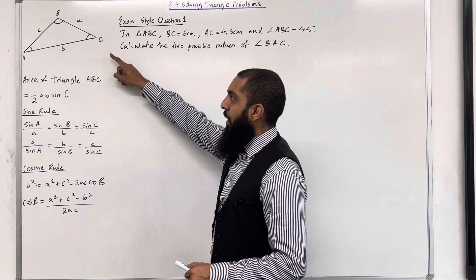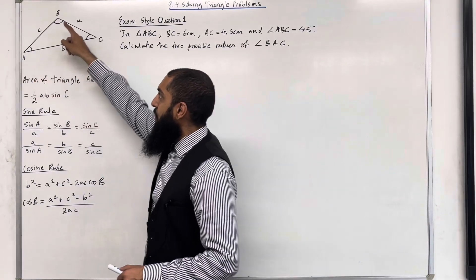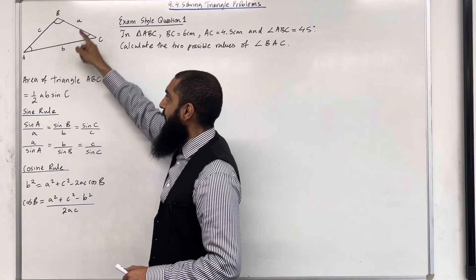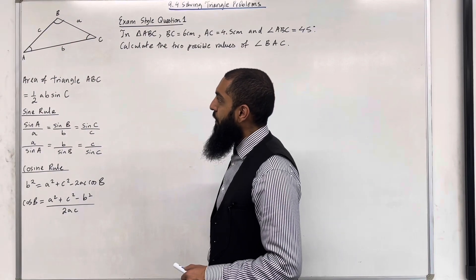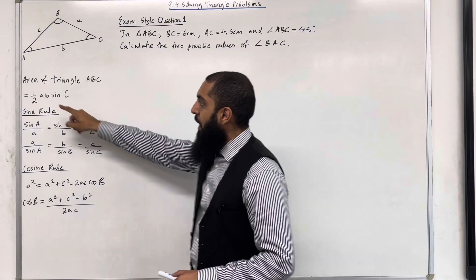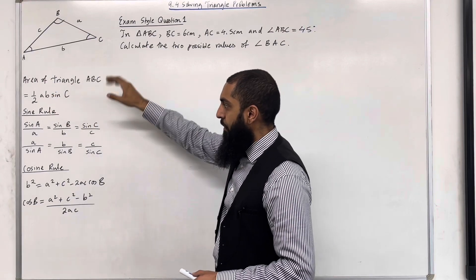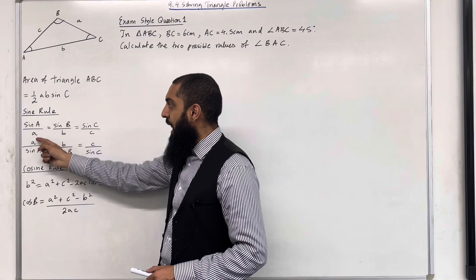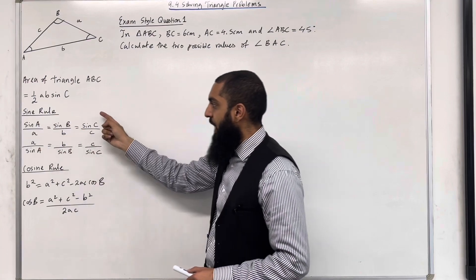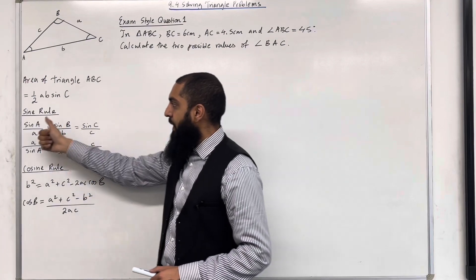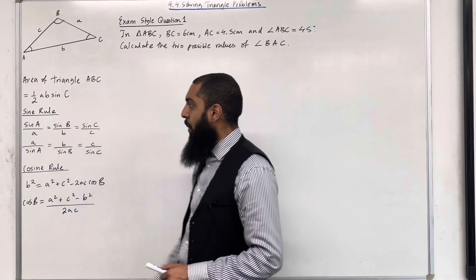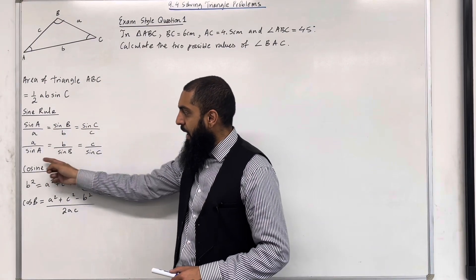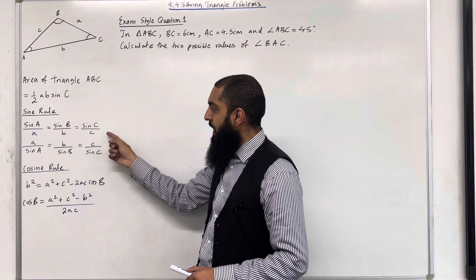Consider the following triangle. The angles are labelled using capital letters and the sides are labelled using lowercase letters. The area of triangle ABC is given by one half AB sine C. The sine rule is defined as sine A over a equals sine B over b equals sine C over c. We can take the reciprocal of each element to rewrite it as a over sine A equals b over sine B equals c over sine C.